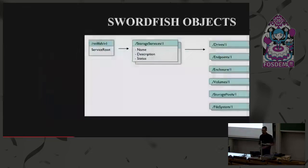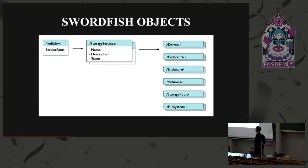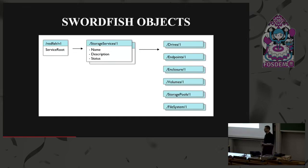In a physical chassis you can find power information, thermal information and things like that. Swordfish is built right on top - there's still that redfish/v1 service route, but it adds additional information through a storage services collection. Through that you can see drives, enclosures, storage pools. The protocol is meant for block, file, and object storage - focus so far has been on block storage, with file and object still evolving.